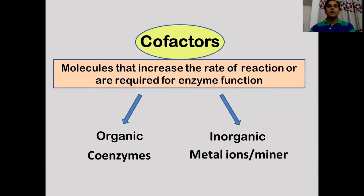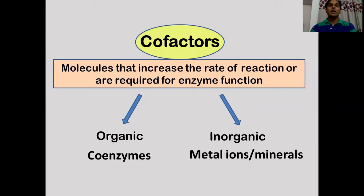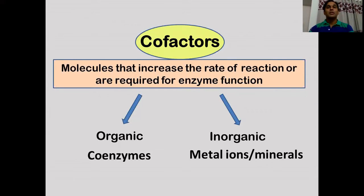Cofactors are helper molecules and can be organic or inorganic in nature. Organic cofactors are called coenzymes. These coenzymes quite often bind loosely to the binding site of an enzyme and aid in substrate interactions. Inorganic ions, minerals, or metal ions do not bind the enzyme the same way; enzymes with a binding site for metal ions are known as metalloenzymes.